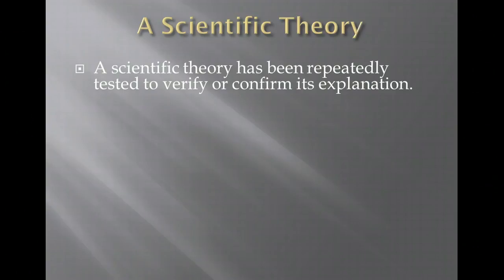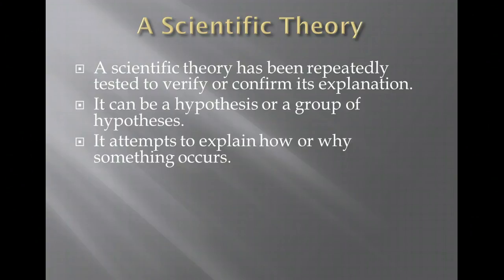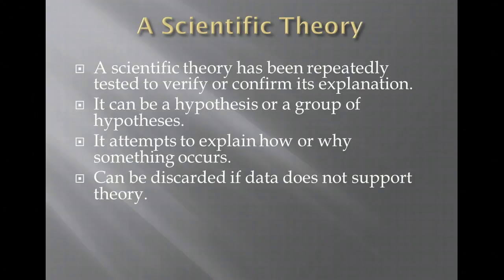A scientific theory has been repeatedly tested to verify or confirm its explanation. It can be a hypothesis or a group of hypotheses. It attempts to explain how or why something occurs. This could be the Big Bang theory, which attempts to explain how the universe was created, or Darwin's theory of evolution, which attempts to explain how living creatures evolve. They can be discarded if the data does not support the current theory.